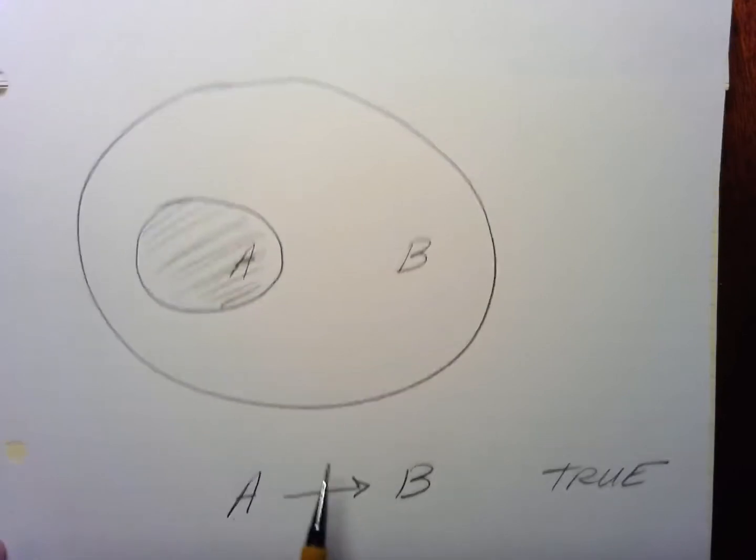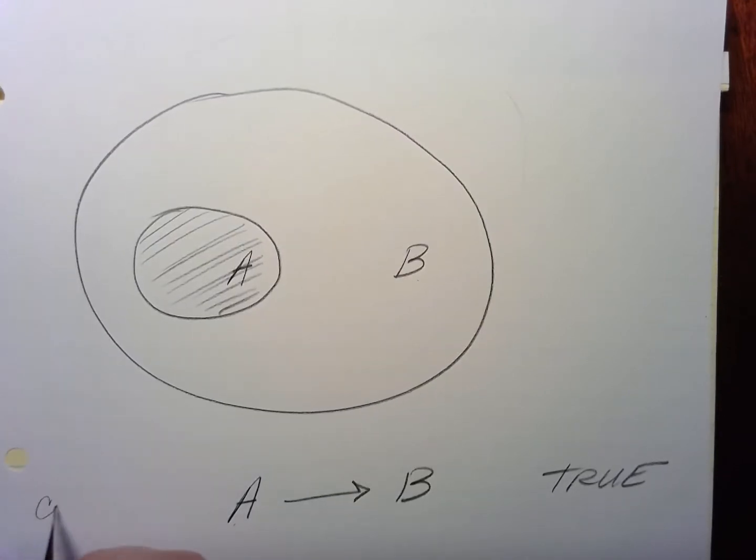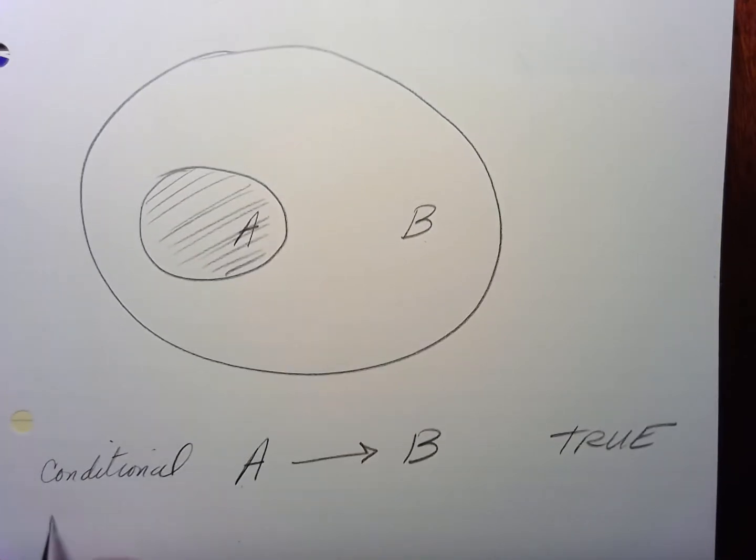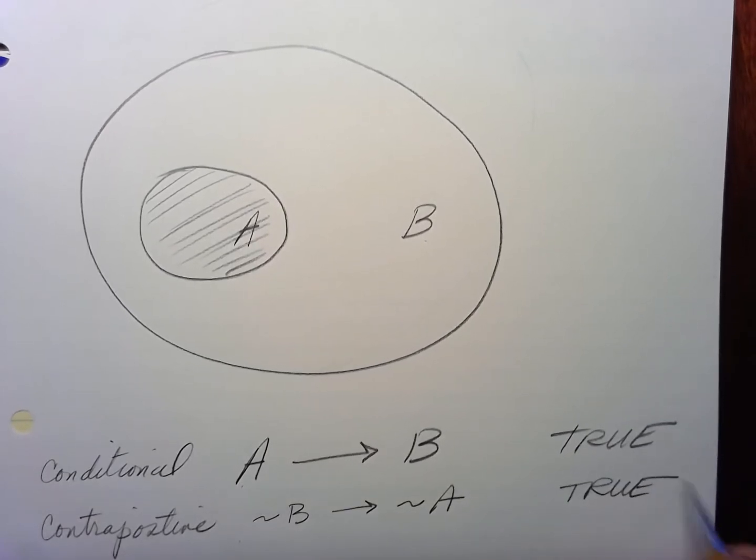Then if it's, so this would be the conditional. Then the contrapositive here, the contrapositive here is not B implies not A, which also has to be true. But let's check it out.